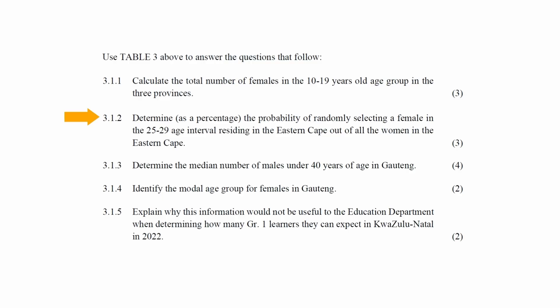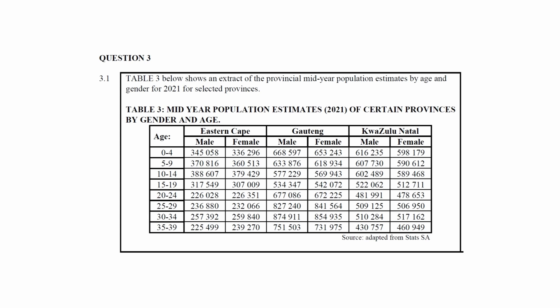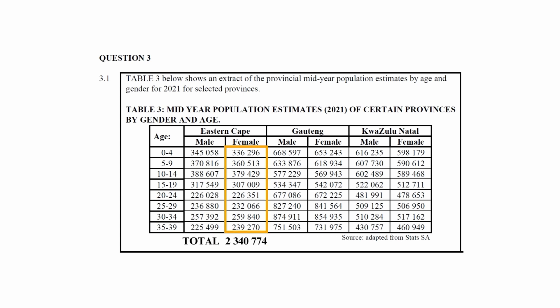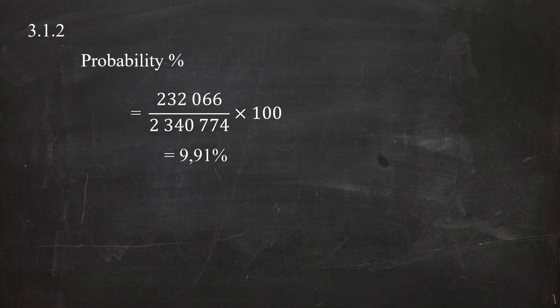In question 3.1.2, you have to determine, as a percentage, the probability of randomly selecting a female in the 25 to 29 age interval residing in Eastern Cape out of all the women in Eastern Cape. From the table, the number of females in Eastern Cape aged 25 to 29 is 232,066, and the total number of females in Eastern Cape is 2,340,774. So the probability equals 232,066 divided by 2,340,774, multiplied by 100, which equals 9.91%.